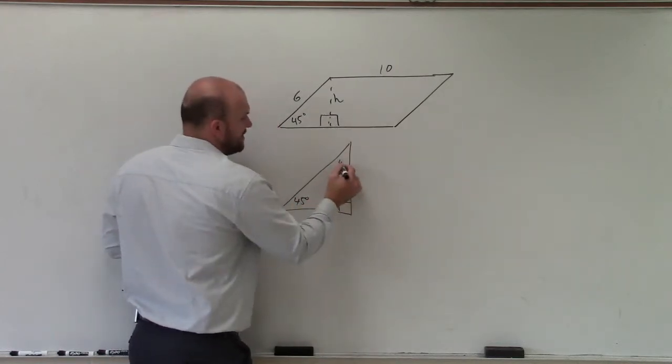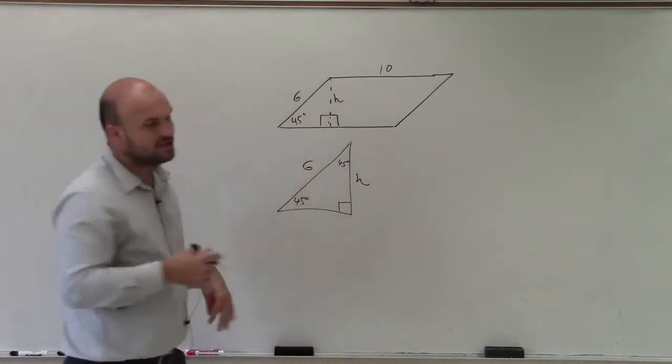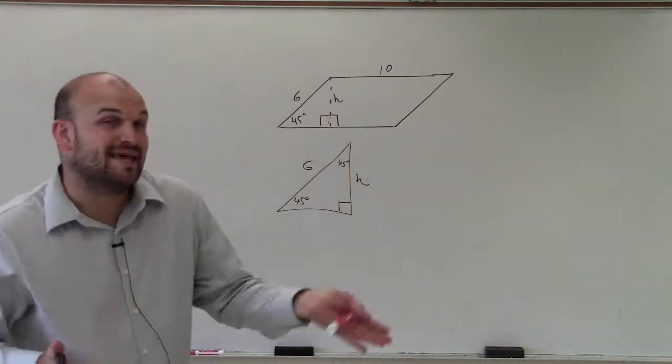If that's 45 degrees and that's 90, then that has to be 45 degrees. That's 6, and that's h. So now I'm looking at it and my leg is my missing term.